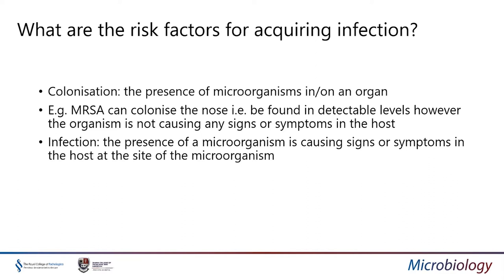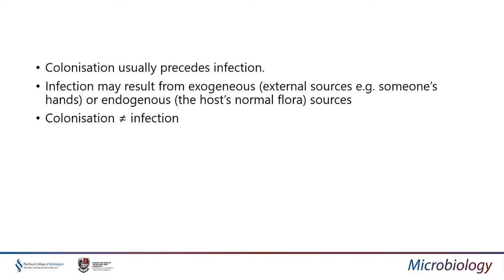However, if you had a patient from whom you detected MRSA in the nose and they had signs of cellulitis and infection, then they have an infection because the MRSA is causing signs or symptoms at the site where you found it. Usually, patients are colonized with a microorganism before they get an infection. Infection may result from exogenous — external — sources such as somebody else's hands, or endogenous sources, which is the host's normal flora. Colonization does not mean infection, and we should always remember this.